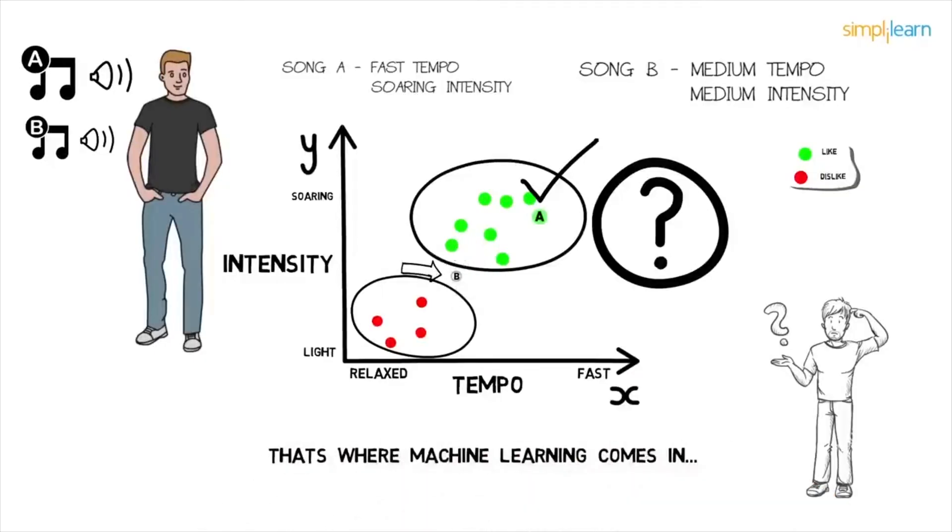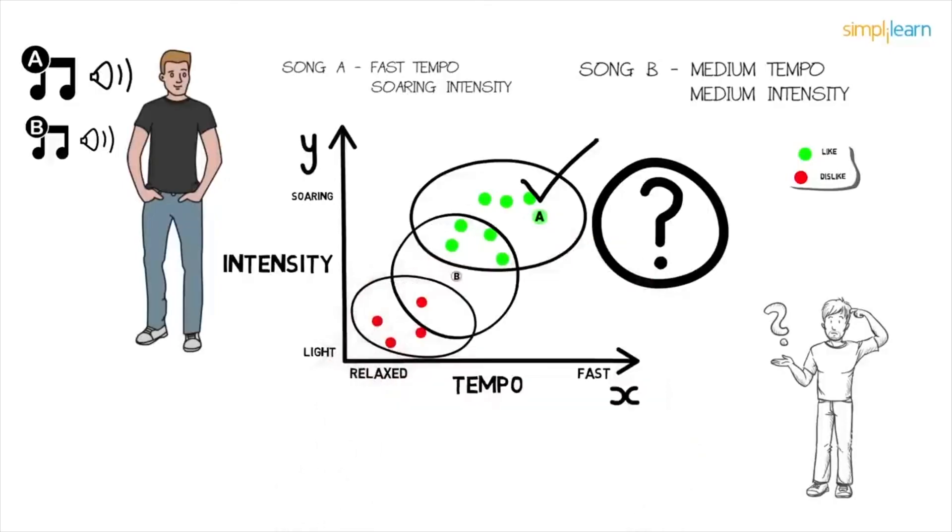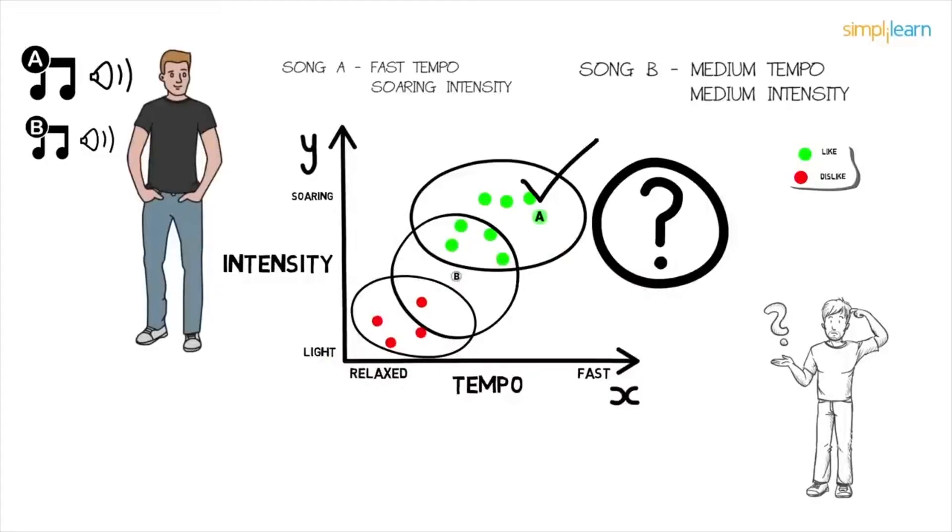In the same example, for Song B, if we draw a circle around the song, we see that there are four votes for like whereas one vote for dislike. If we go for the majority votes, we can say that Paul will definitely like the song. This was a basic machine learning algorithm called K-nearest neighbors. This is just a small example of one of the many machine learning algorithms. Quite easy, right?